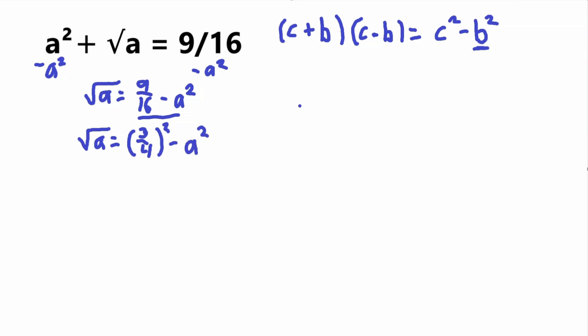Now we got this to match our third binomial formula. I'm going to rewrite this equation with 3 fourths being c and a being b. So we have square root of a equals 3 fourths plus a times 3 fourths minus a. Now we got these values, 3 fourths plus a and 3 fourths minus a, but we still need to figure out what a equals.